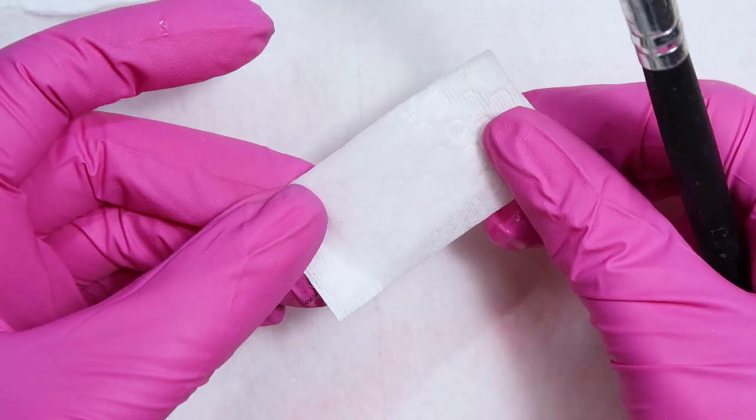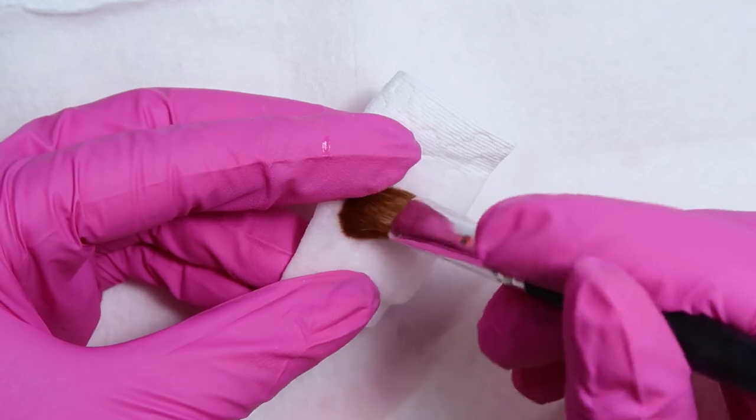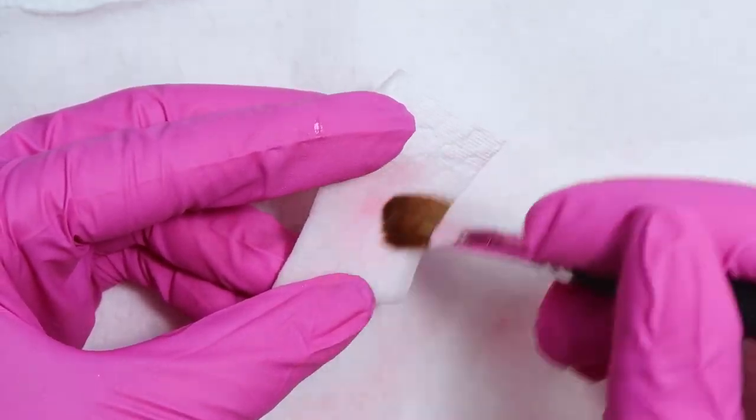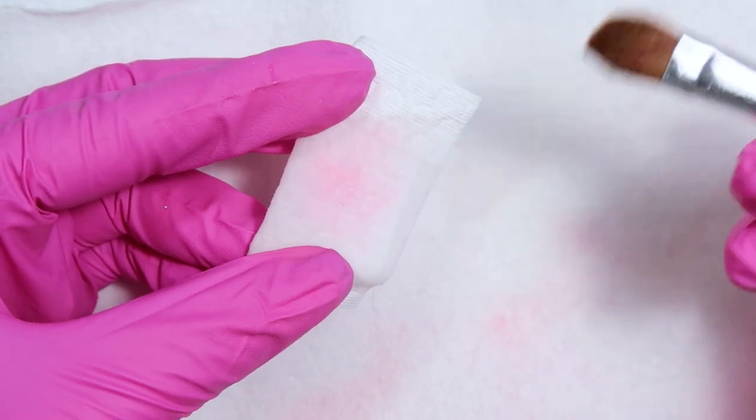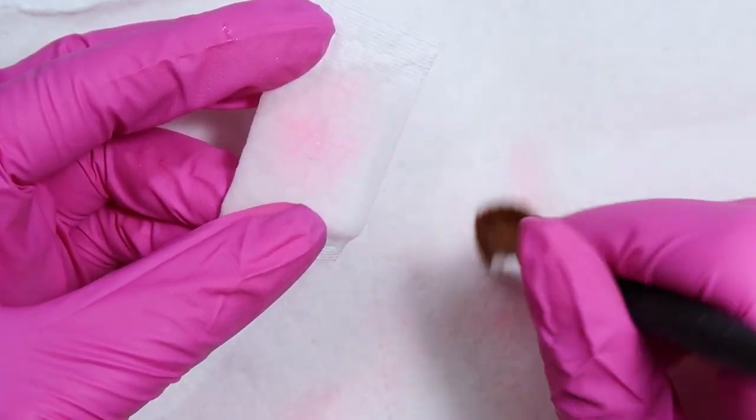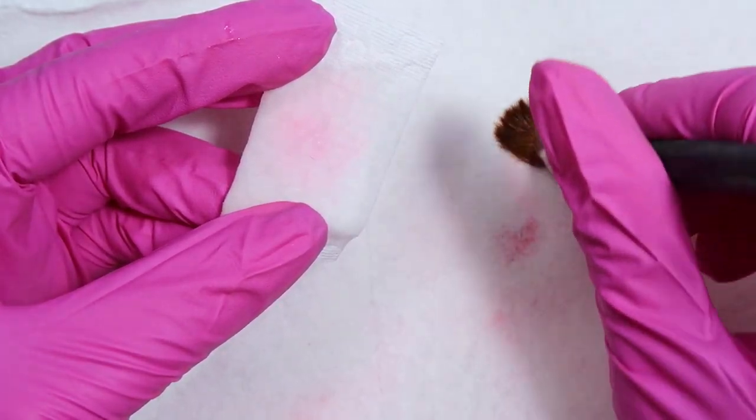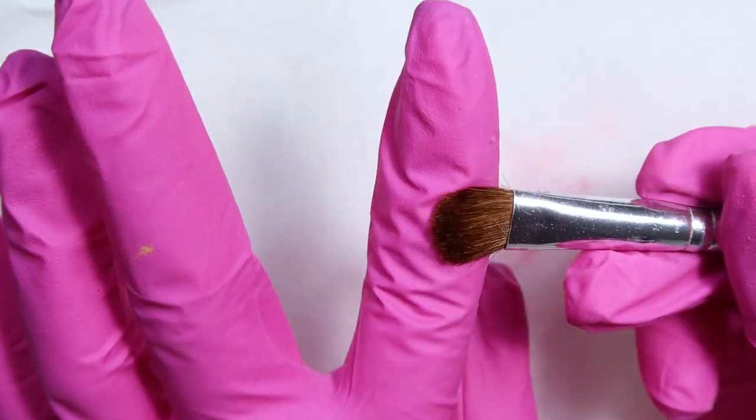My tips now for cleaning your brush is taking a lint-free wipe with some alcohol and just rubbing that brush into that alcohol and then rubbing it on the dry paper towel to get any of that excess pigment out.